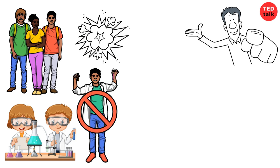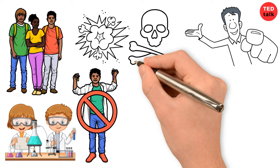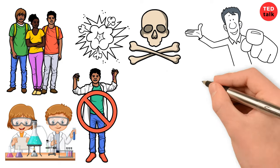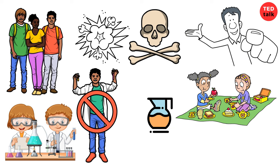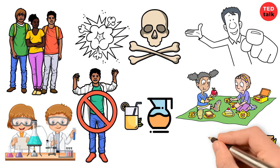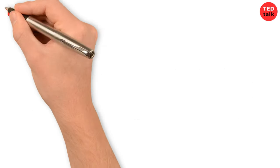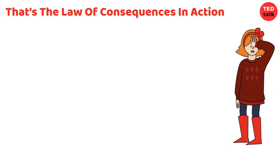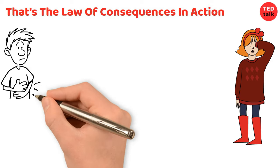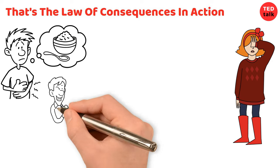That's another example of the law of consequences. Someone's silly mistake leads to a big mess and maybe even some danger for everyone involved. It's like going to a picnic and someone forgetting to put the lid on the lemonade jug. When they go to pour a glass, the lemonade spills everywhere and ruins the sandwiches and snacks. That's the law of consequences in action: a small mistake leads to a big mess and maybe even some hungry picnic goers.